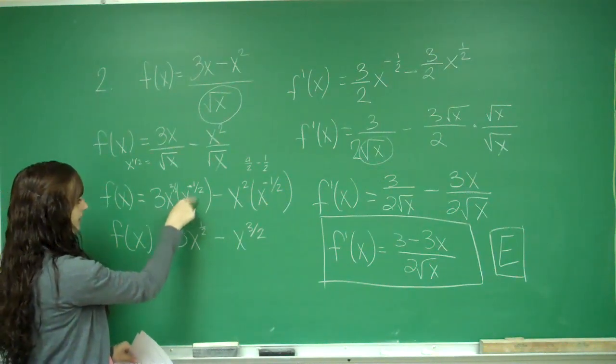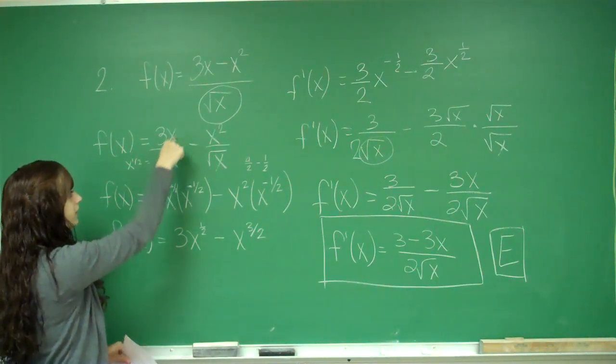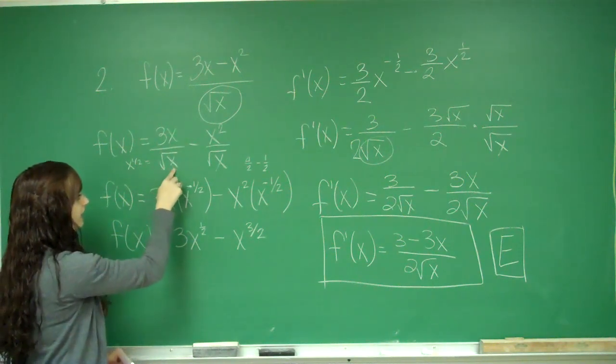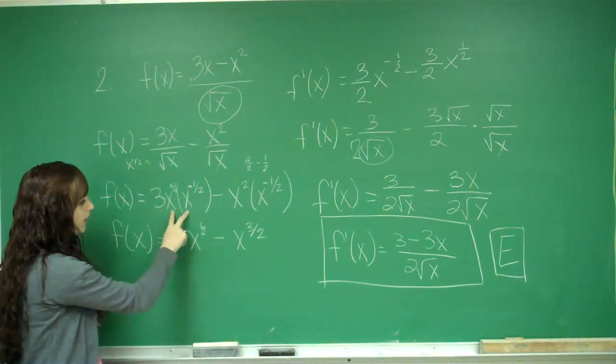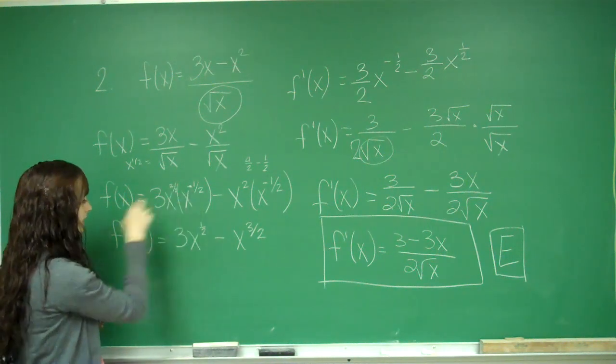I can bring this up as x to the negative one half. Or you could have just subtracted from this denominator. If I'm dividing and I have the same base, I subtract exponents. If I'm multiplying and I have the same base, I add exponents.